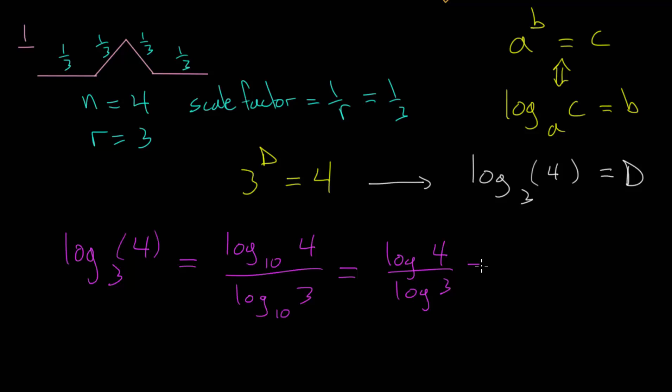Or we can write this with the natural log. With the change of base rule, as long as the base is the same and you put the input up top in the numerator and the original base in the denominator, we can write this with base e, the base of the natural logarithm. Usually we write this as the natural log, ln of 4 divided by ln of 3. But all of these are equivalent. And if we plug this into a calculator, what we get is that the dimension d is 1.261859. This number will go on forever since it's an irrational number.